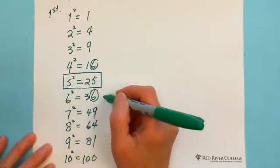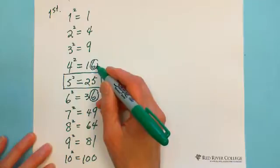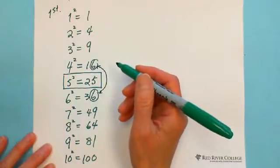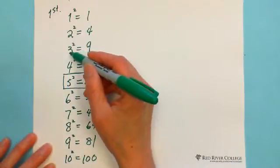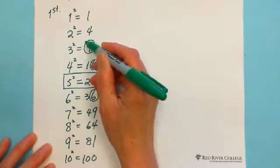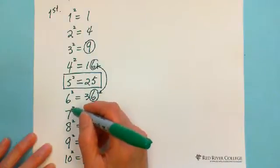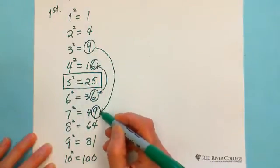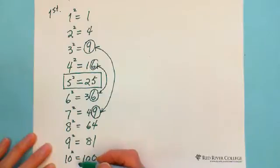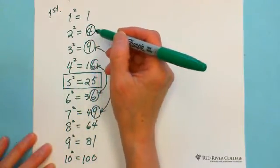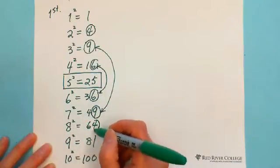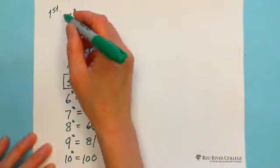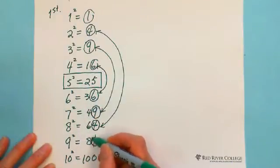4 squared is 16, 6 squared is 36 — both end in 6. And 3 squared equals 9, just a single digit. 7 squared equals 49 — the last digit is also 9. Same! And 2 squared equals 4, a single digit. 8 squared equals 64 — also ends in 4. And 1 squared equals 1, and 9 squared equals 81 — the last digit is 1.